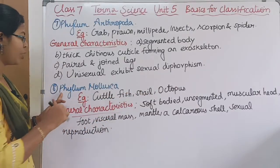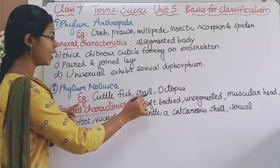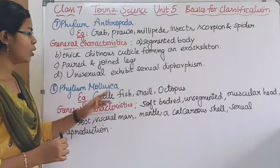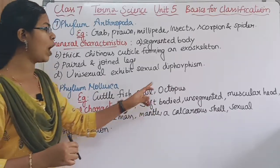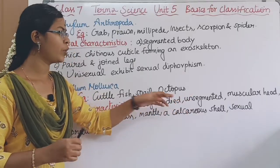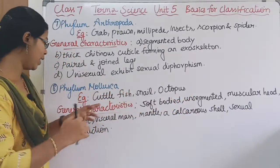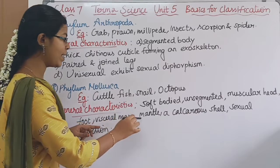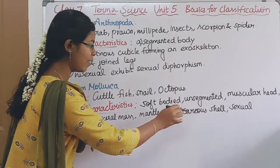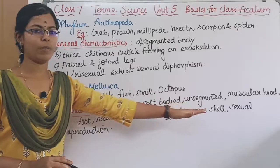The eighth phylum division is Mollusca. For example, cuttlefish, snail, and octopus. The body is soft and unsegmented. The body has a muscular foot, visceral mass, mantle, and calcareous shell. The method of reproduction is the sexual method.